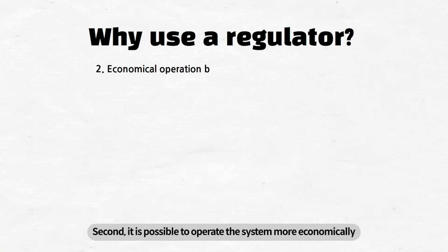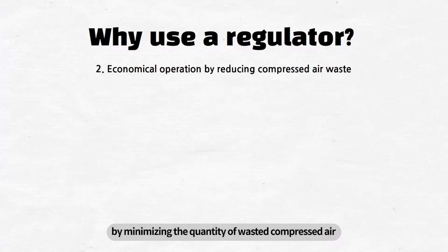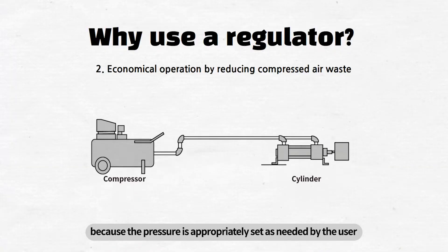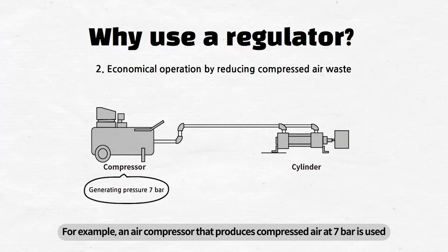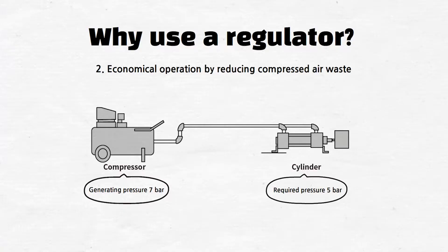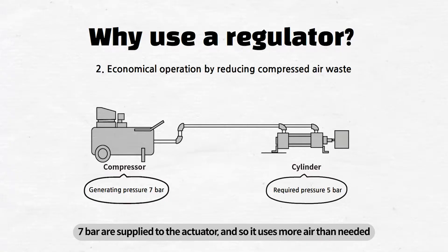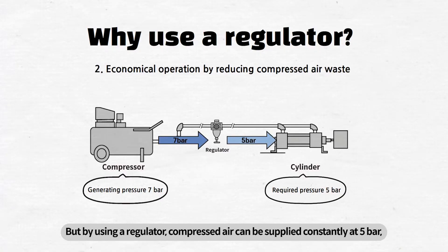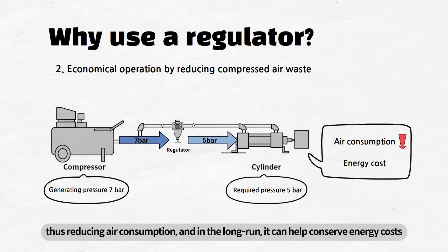Second, it is possible to operate the system more economically by minimizing the quantity of wasted compressed air. Waste of compressed air is reduced because the pressure is appropriately set as needed by the user. For example, an air compressor that produces compressed air at 7 bar is used, and let's assume that the pressure needed for operating the actuator is 5 bar. If a regulator is not used, 7 bar are supplied to the actuator, and so it uses more air than needed. But by using a regulator, compressed air can be supplied constantly at 5 bar, thus reducing air consumption, and in the long run, it can help conserve energy costs.